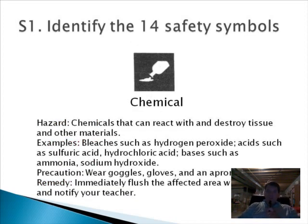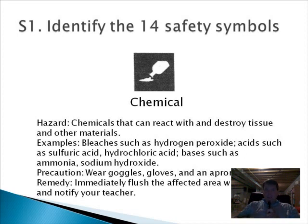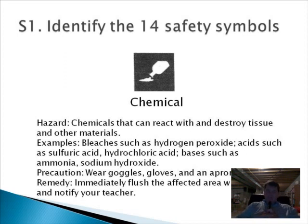The next one is the chemical symbol, which is a bit more serious than the irritant. It means we have a chemical that could cause tissue damage. Things like bleaches such as hydrogen peroxide, acids such as sulfuric acid and hydrochloric acid, and bases such as ammonia and sodium hydroxide could cause a burn to the upper layer of your skin. The most sensitive tissue is your eyes, so definitely wear goggles. Gloves and an apron to cover your clothing are also good. If you get some on you, wash it off with plenty of soap and water and let the teacher know.